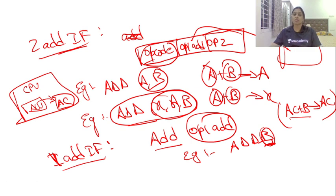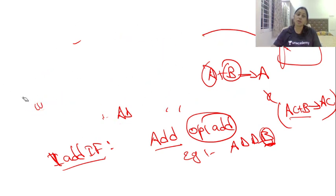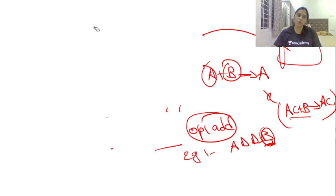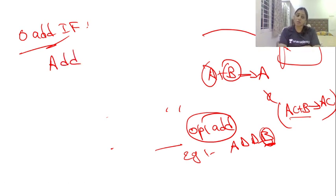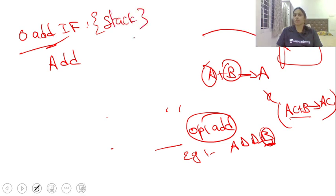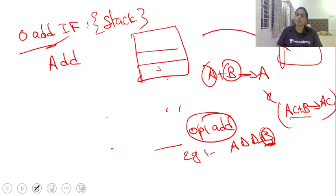The zero address instruction format has no address fields — just simply 'add' or 'mul'. Zero address instruction format always works on stacks. Whenever we write 'add', whatever is at the top of the stack will be added to the next number, and the result will be placed back on top of the stack.